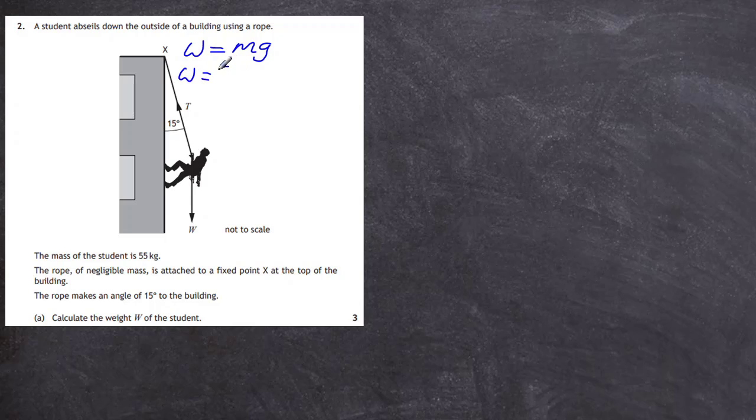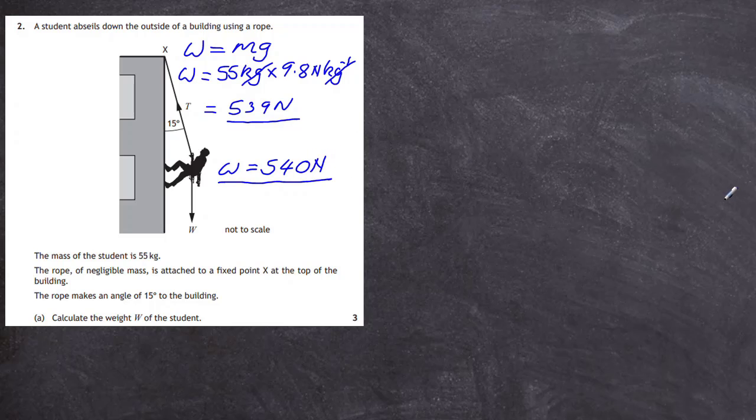So the weight W is equal to 55 kg, that's the mass of the person, multiplied by 9.8 newtons per kilogram. So we do that in our calculators, we end up with 539 newtons. Now we can use significant figures here because the student's mass is 55 kg, that's two significant figures. The gravitational field strength 9.8 is two significant figures. So really our final answer should be in two significant figures, so the weight should be written as 540 newtons.